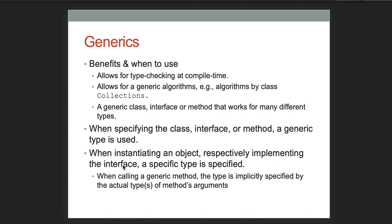Know about generics: the main benefits are that they allow for type checking at compile time and allow creation of generic algorithms — like the algorithms in the Collections class. Understand that a generic class, interface, or method can work for many different types. When specifying the class, interface, or method, a generic type parameter is used. When instantiating an object or implementing an interface, a specific type is provided. When calling a generic method, the type is implicitly specified by the actual types of the method's arguments.